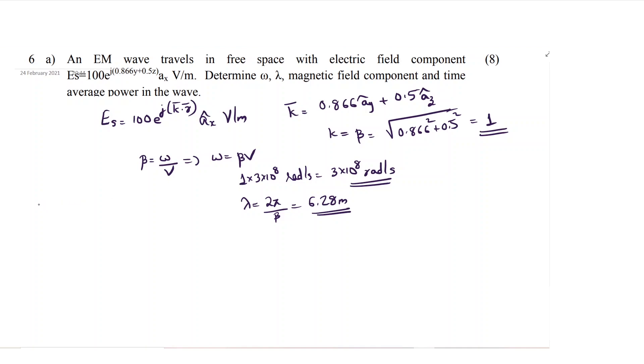Next, what you have to calculate is magnetic field component h. The expression you should remember is k cross e is equal to omega mu into h. This is the expression. How to calculate h? Vector h will be 1 by omega mu into k cross e.